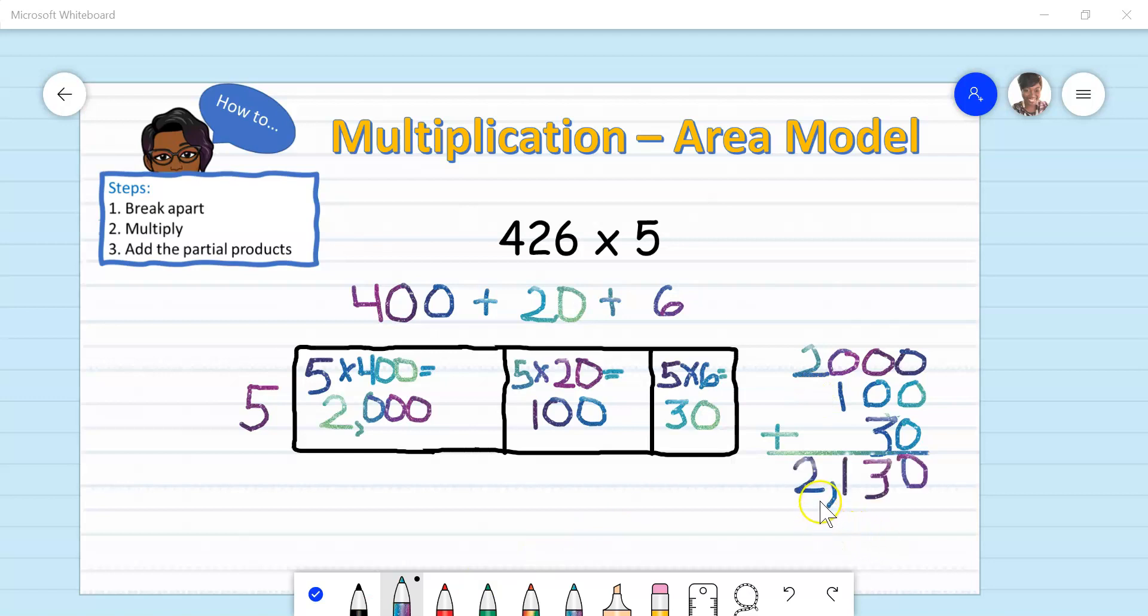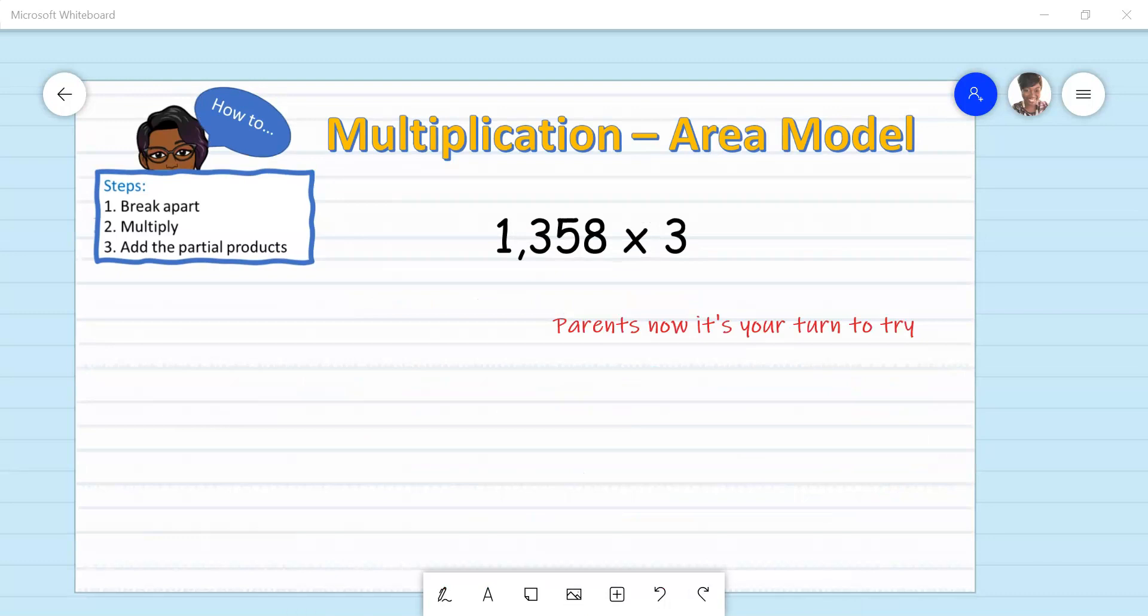Here I have the total, 2,130. Therefore, I know that 426 times 5 equals 2,130. Now parents, it's your turn to try. In order to help your child, you must have an understanding of it too. But you're not alone, so there's no need to fret.